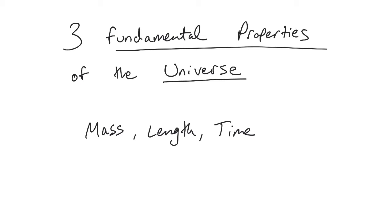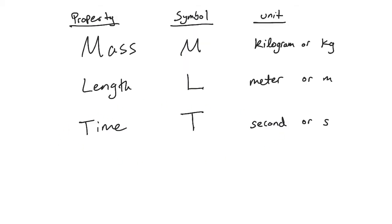Pretty much everything you're going to see can be boiled down into some combination of these three fundamental ingredients. Now I've created a simple table for each property: mass, length, and time. And I've made a symbol to represent each one. Capital M for mass, capital L for length, and capital T for time.